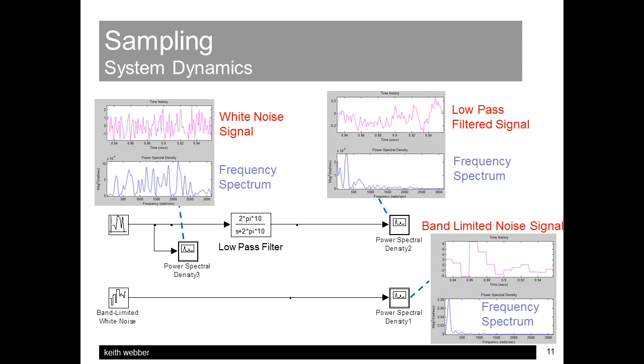Of course, the dynamics of any practical application will inevitably also limit the bandwidth of the signals involved. For example, this slide shows the effect on the signal and frequency spectrum of passing white noise through a simple low-pass filter, with a gradual frequency roll-off, in comparison to the sharper cut-off of the band-limited process.